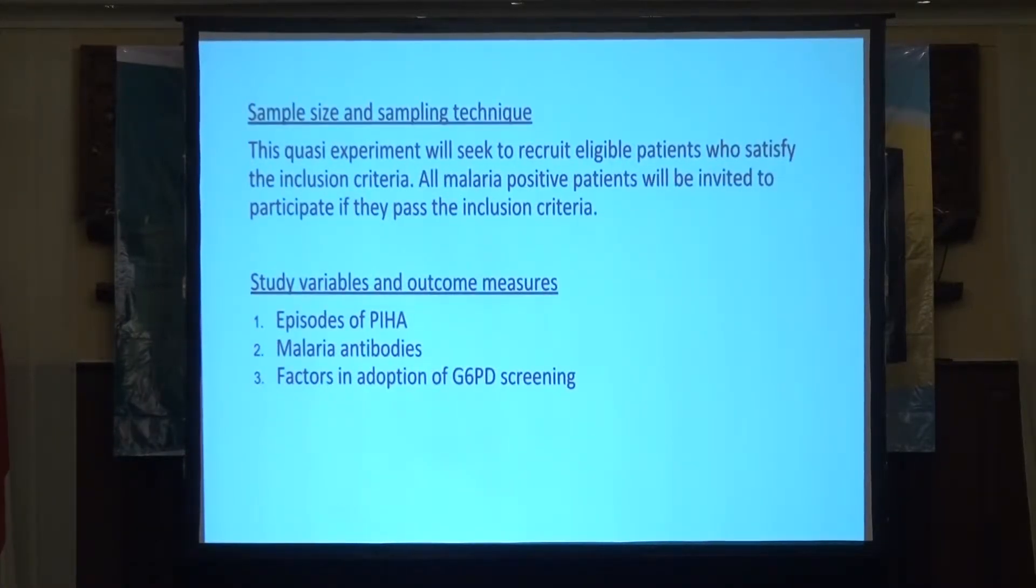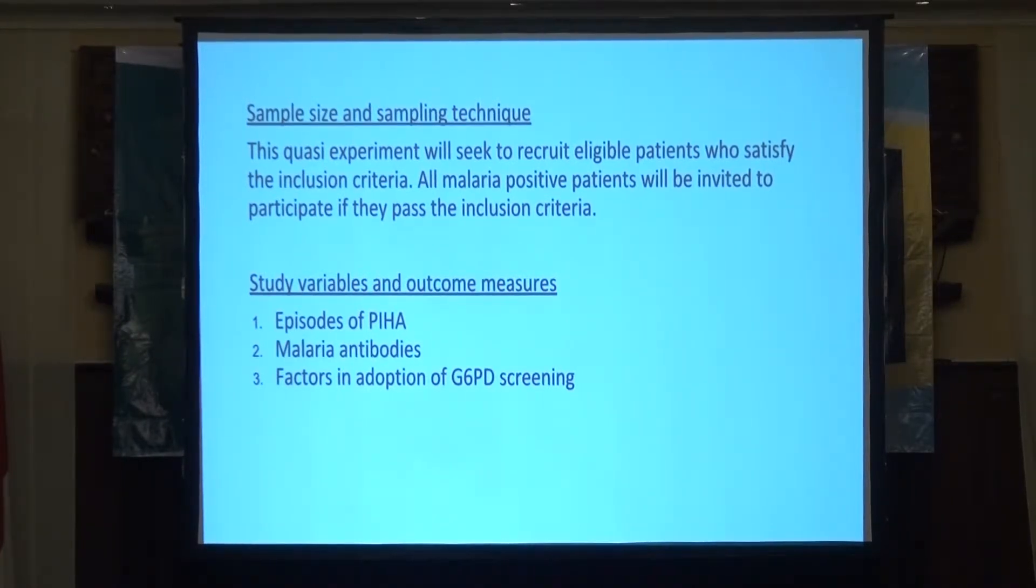For sample size and sampling technique, this is a quasi-experiment. We'll seek to recruit eligible patients who satisfy the inclusion criteria. All malaria-positive patients will be invited to participate if they pass the inclusion criteria. For the study variables and outcome measures, we have the first episodes of PIHA, second is malaria antibodies, and then the factors of adoption of G6PD screening.